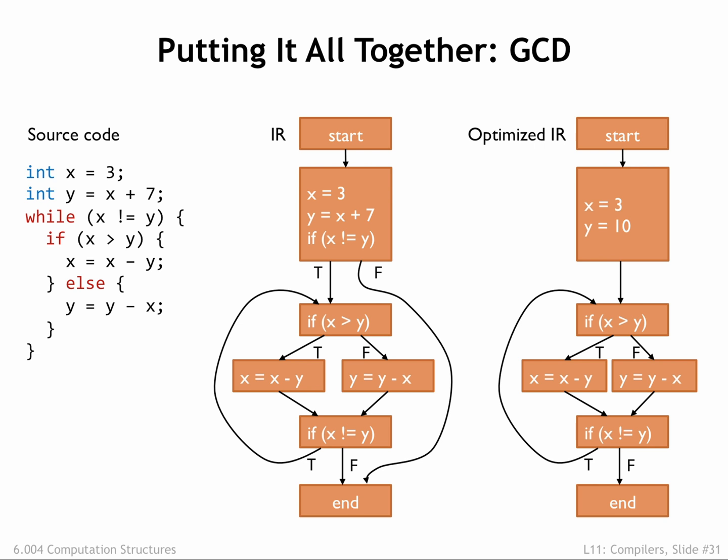Here's the original control flow graph for the GCD code along with a slightly optimized control flow graph. GCD isn't as trivial as the previous example, so we've only been able to do a bit of constant propagation and constant folding. Note that we can't propagate knowledge about variable values from the top basic block to the following if block since the if block has multiple predecessors.